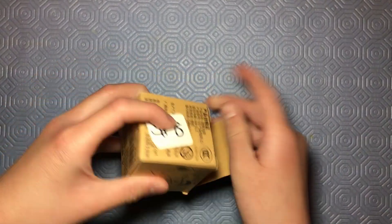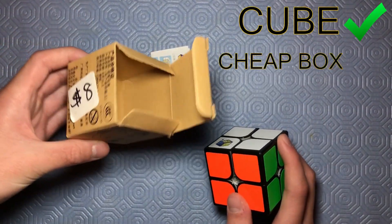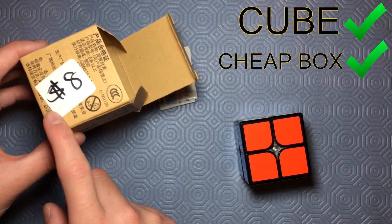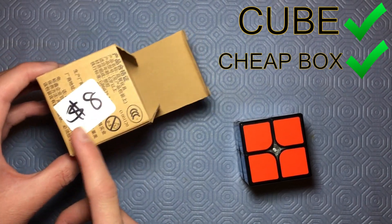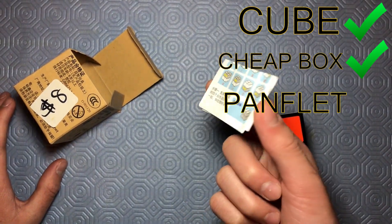Your unboxing experience would kind of look like this. You get the cube, the cheap box, except for that $8 sticker. I got this at Alberta 5th Anniversary 2020, and you'll get this pamphlet.